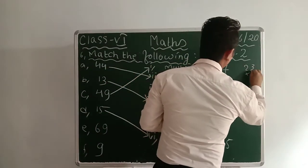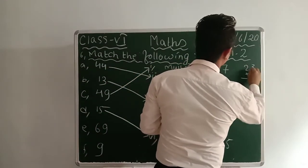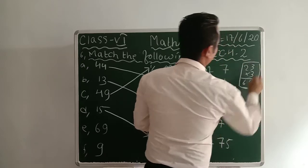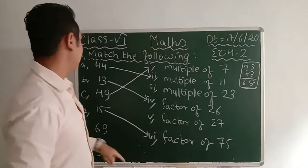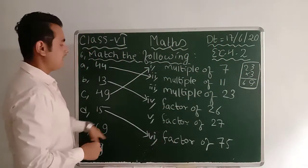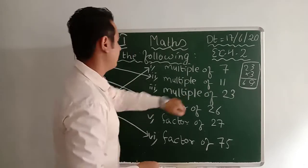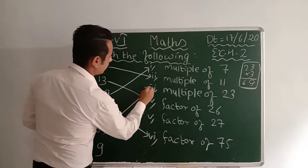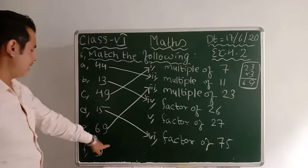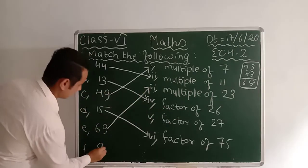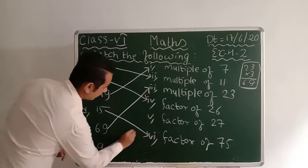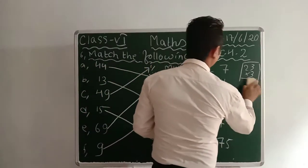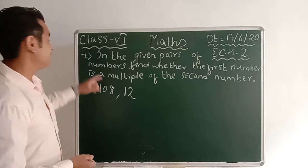Now 69: 23 times 3 gives you 69, so 69 is a multiple of 23. That match is done. The remaining number is 9, which is a factor of 27. So 9 matches with 'factor of 27.' That completes question 6.